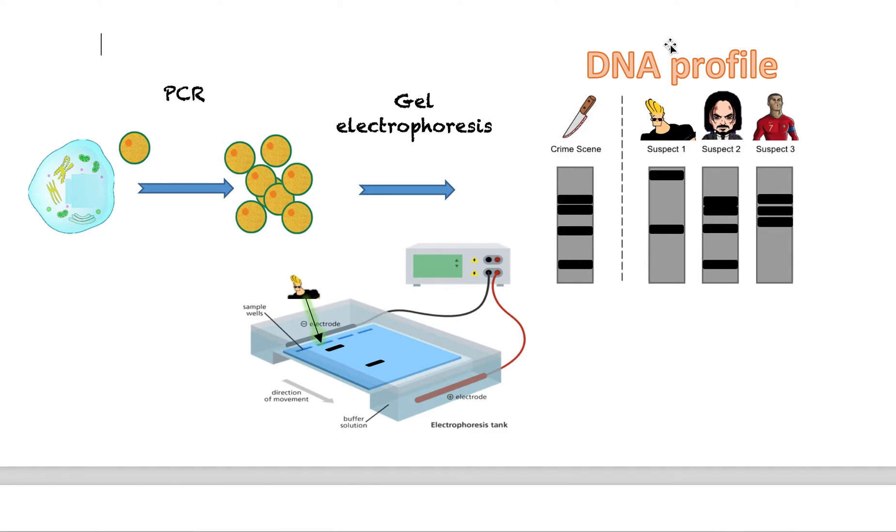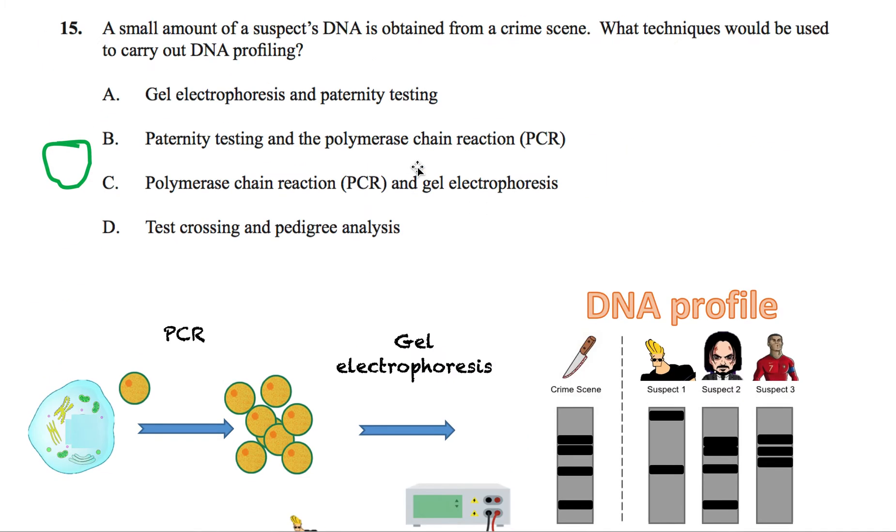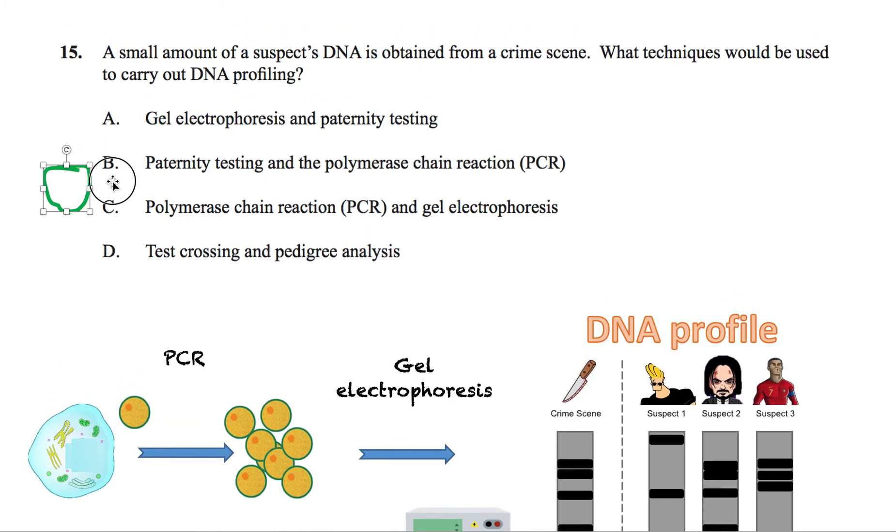It's pretty much who you are in terms of your DNA. So this is how this is Johnny Bravo's DNA profile. This is who he is. His DNA is different from John Wick's and Ronaldo's. So that's where a DNA profile is. It's just basically showing who you are in terms of your DNA. And because people have different DNA, it will separate differently in a gel electrophoresis machine and this will prove that you are different from other people. So you can see the two techniques we used was PCR and gel electrophoresis. So we can see immediately the answer is C.